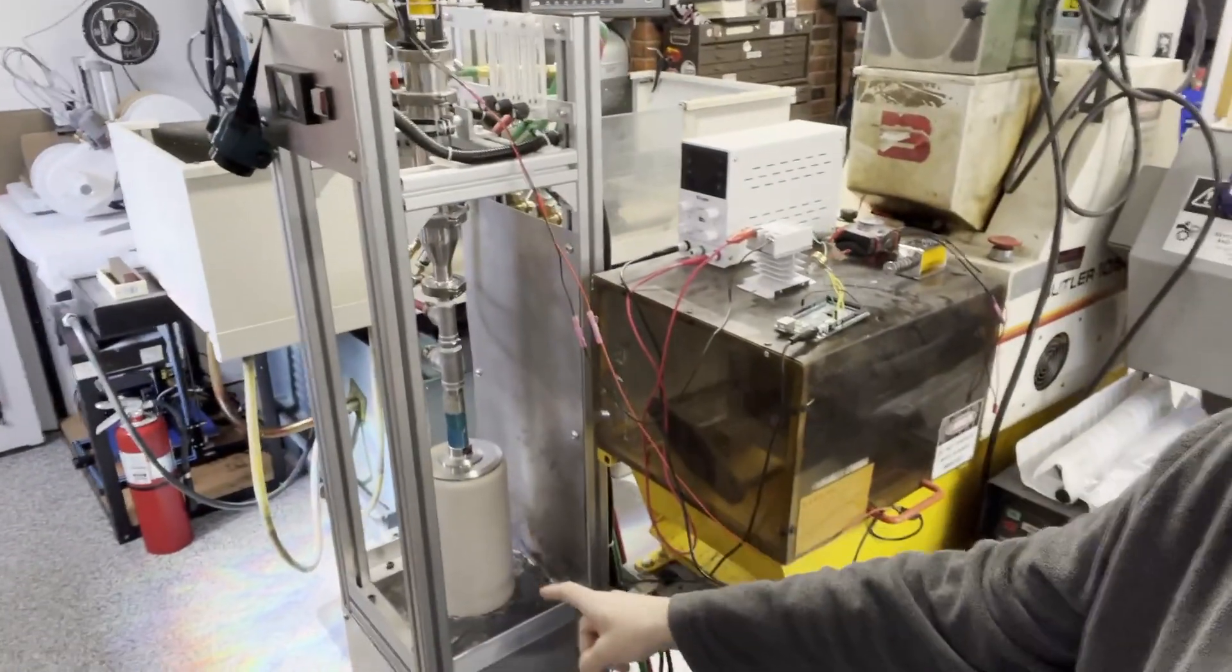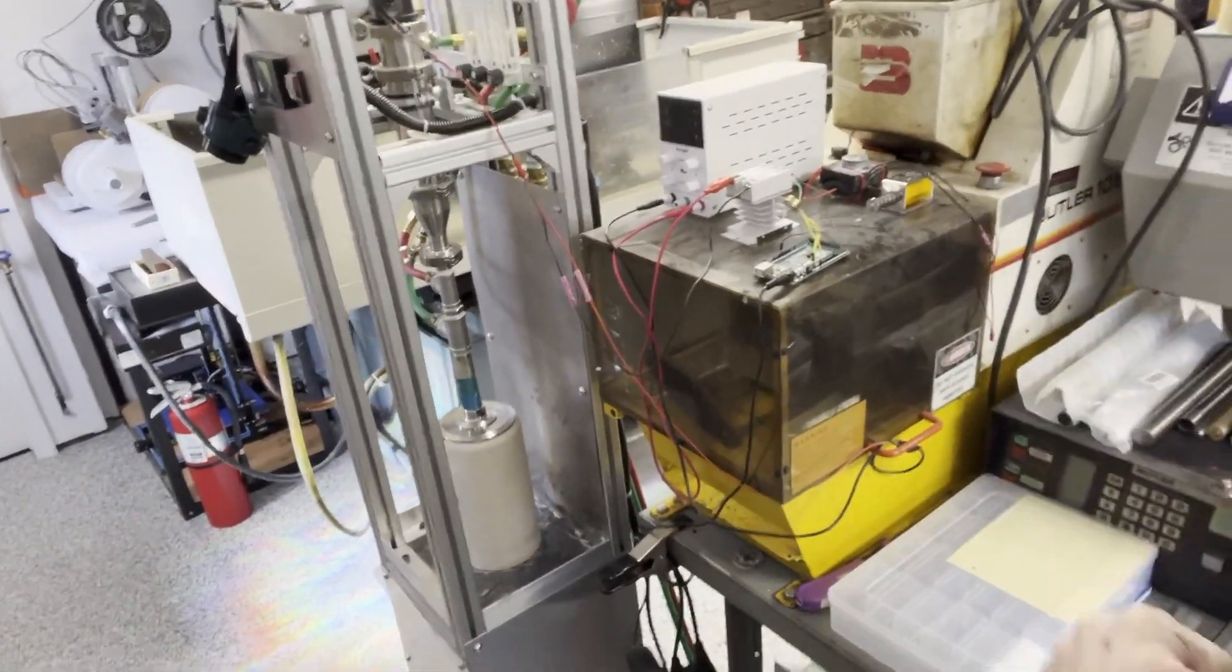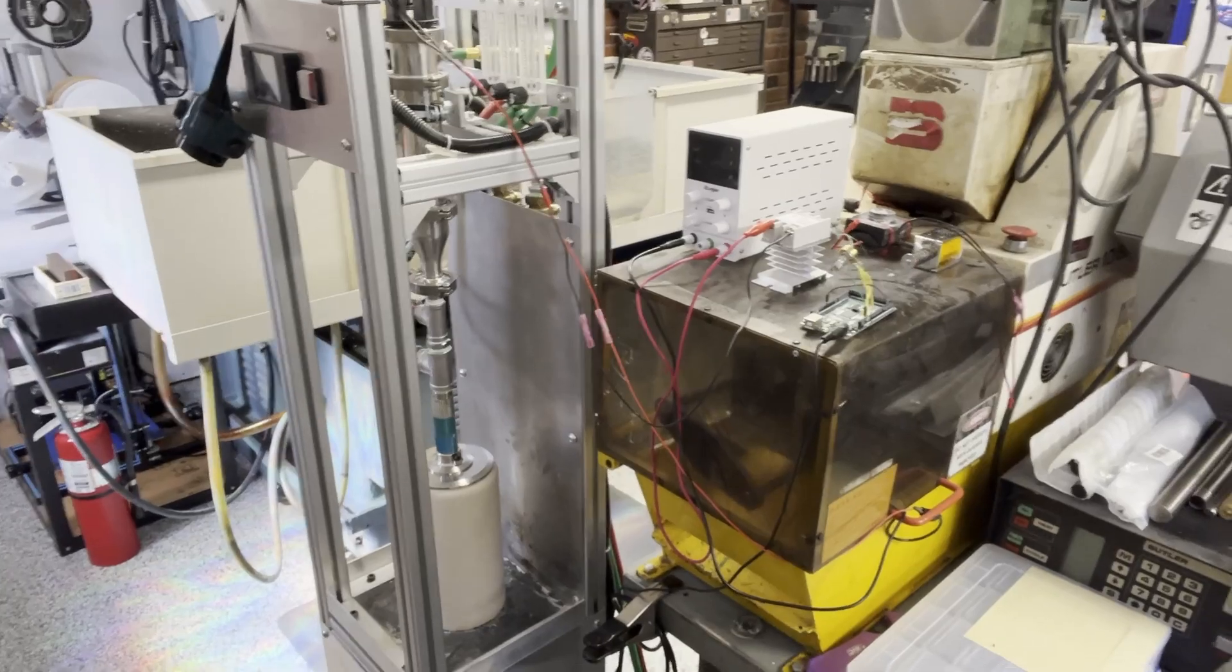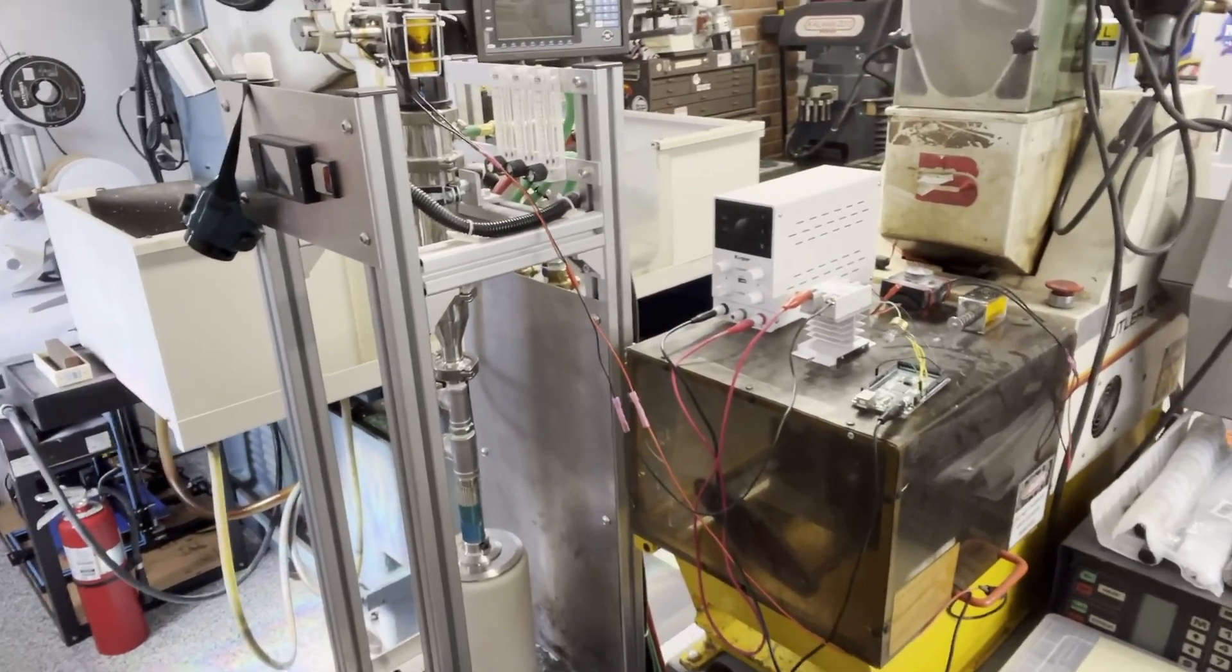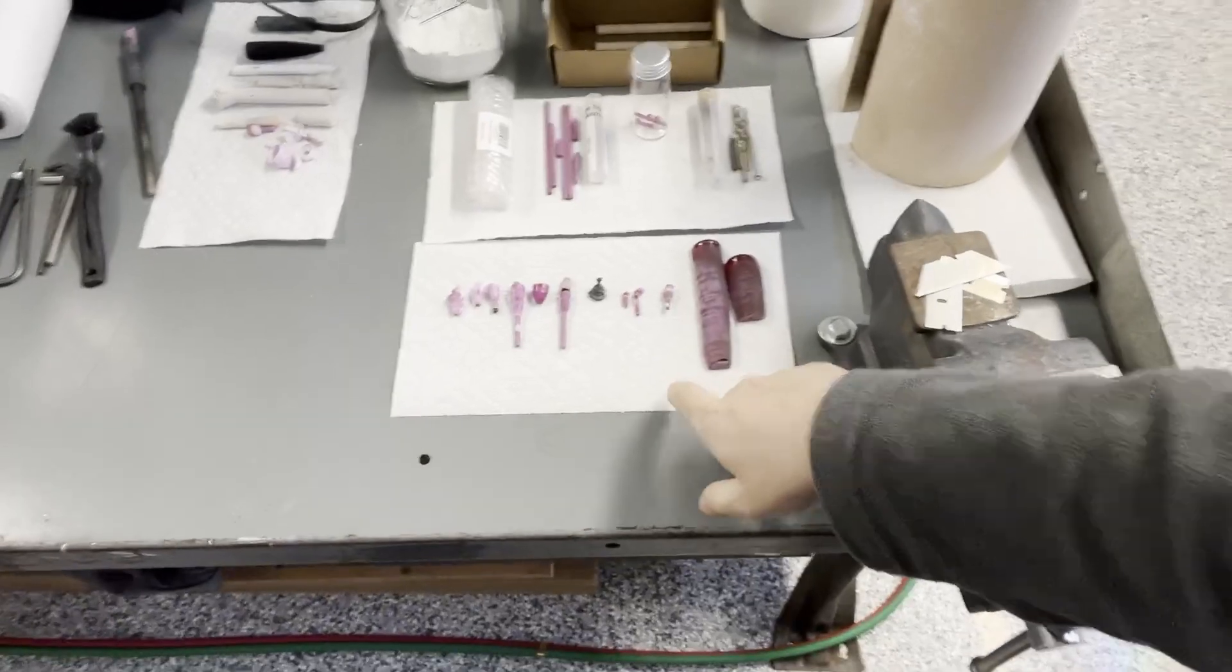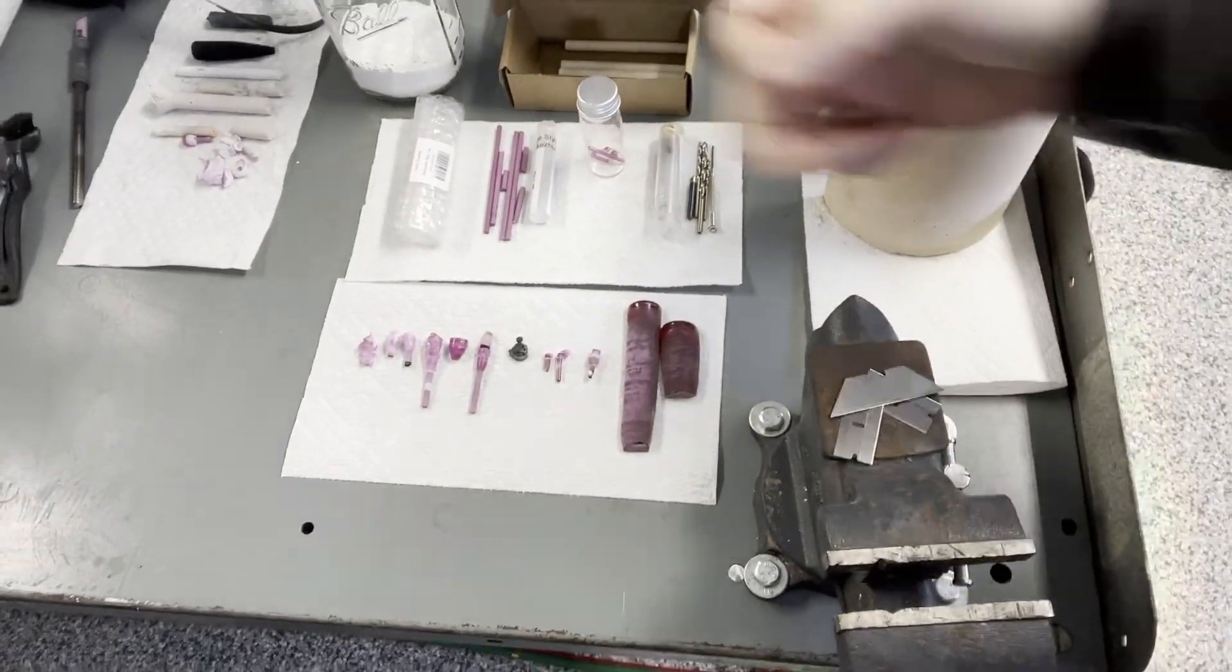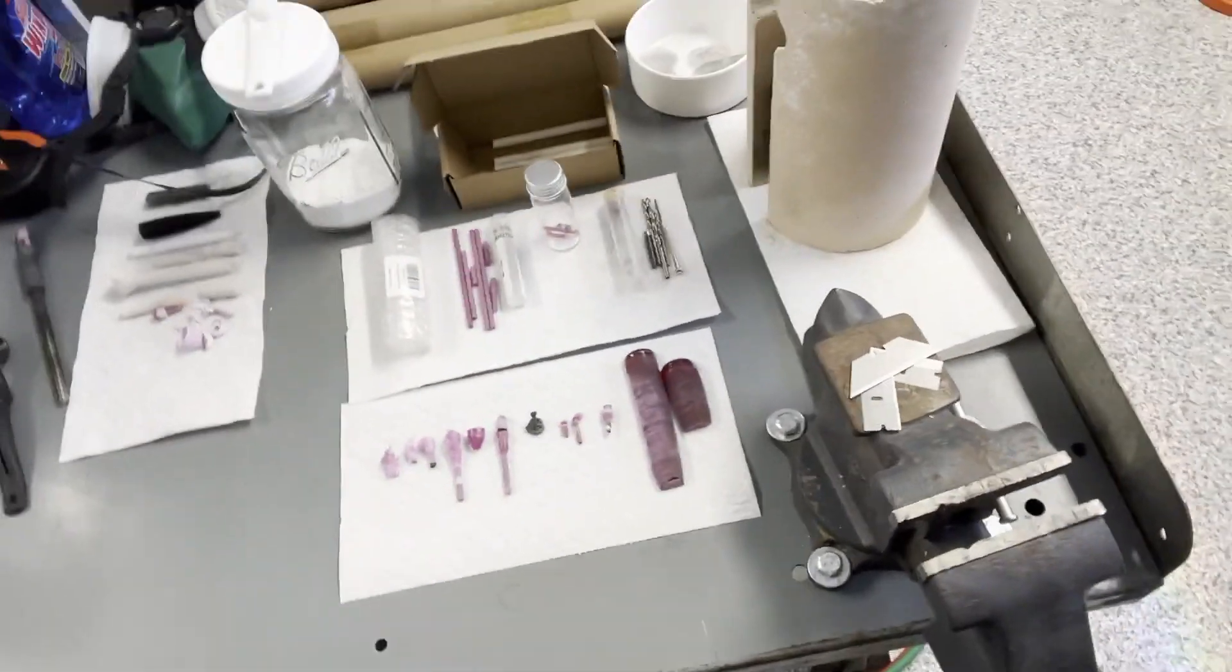Now this is my latest project. This is a verneal furnace used to make synthetic rubies using an oxy hydrogen torch. And you can see here the synthetic rubies, what I started making and what I need to end up making.